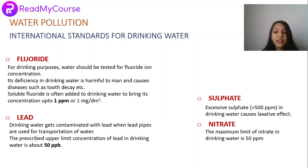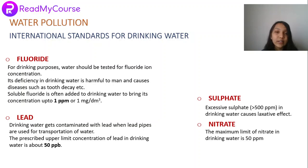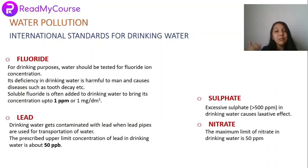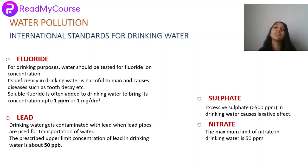For nitrate, the maximum limit in drinking water is 50 ppm. Excessive nitrate can cause blue baby syndrome. These are the chemical limits to be maintained to make drinking water safe. This covers the basic aspects of water pollution in this chapter.